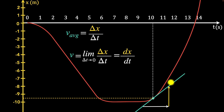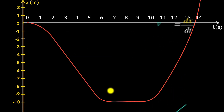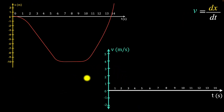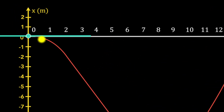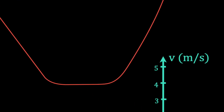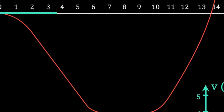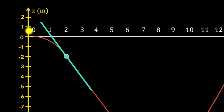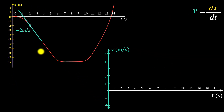Now that we have a tool to calculate instantaneous velocity at every point, let's draw a velocity-time graph — plotting velocity versus time. We draw the tangent at every point and analyze its slope. At t equals zero, the tangent is perfectly horizontal, so the velocity is zero. As we move forward to about two seconds, the tangent becomes more and more steep in the negative direction, so velocity increases in the negative direction — the car is speeding up in reverse.